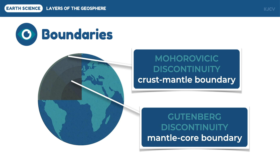In summary, for the chemical layers, the layers are arranged based on their composition. This is relative to the density of the materials, in which denser materials are said to have sunk and lighter materials remained above during the cooling of the earth.